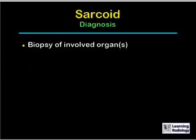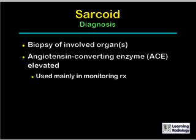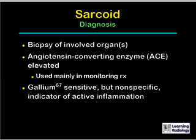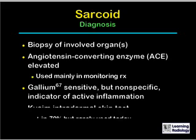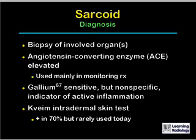The diagnosis is usually made by biopsy of the involved organs. Angiotensin converting enzyme (ACE) is elevated in most cases of sarcoid, but it is nonspecific and used mainly in monitoring treatment. Gallium-67 is sensitive but nonspecific and is used primarily as an indicator of active inflammation. The Kviem intradermal skin test is positive in 70% of patients with sarcoid, but it is rarely used today because of the inaccessibility of the antigen and the length of time it takes to obtain results.